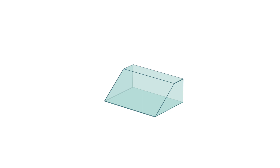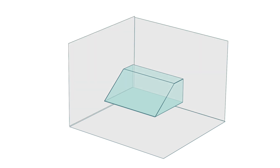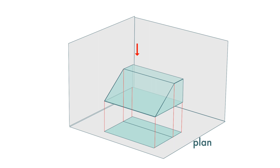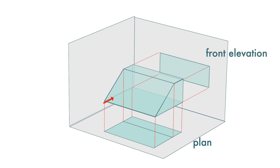Let's look at this object. To put this 3D object into 2D drawings, we need at least three orthogonal projections. Here we have the horizontal plane and the two vertical planes. First we have the top view, and from here we get the plan. Then the front view, and from this we get the front elevation. Then the side view, and from this we get the side elevation.